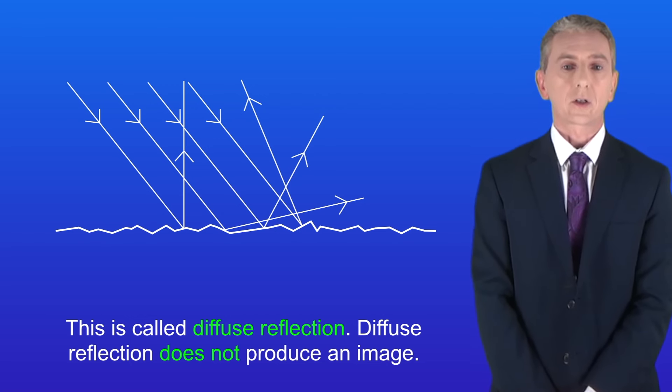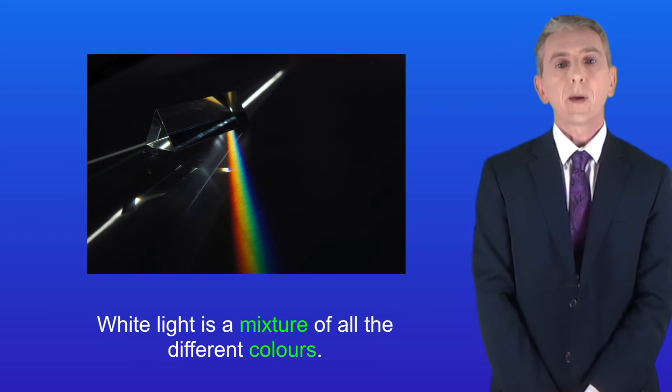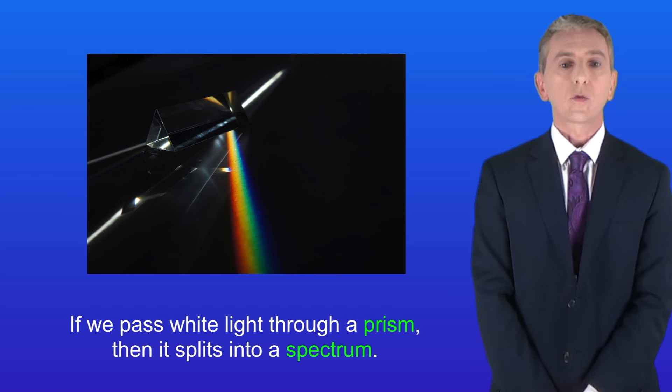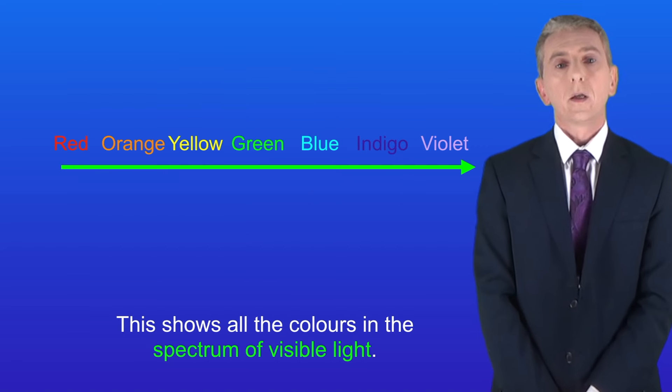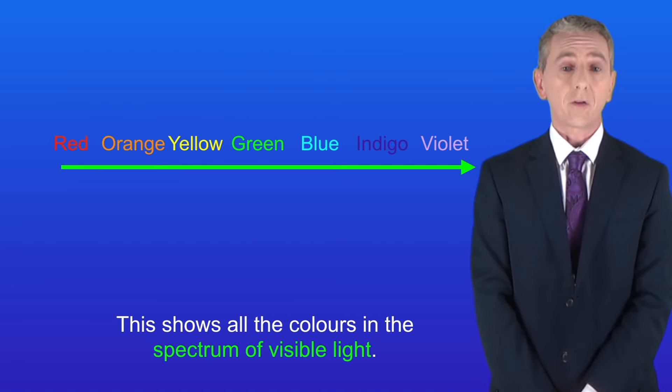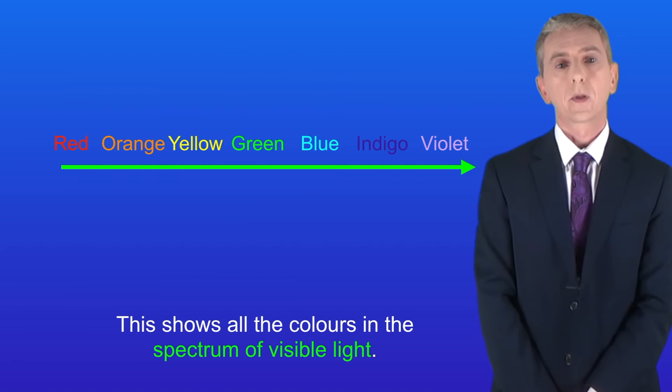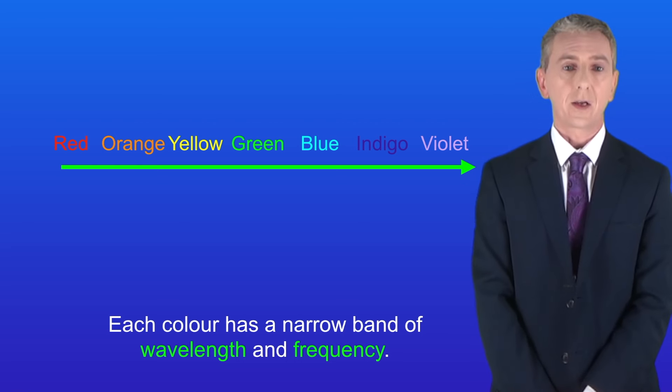Okay we're going to take a look now at color. Remember that white light is a mixture of all the different colors. If we pass white light through a prism then it splits into a spectrum like this. So here are all the colors in the spectrum of visible light. Now the key idea that you need to understand is that each color has a narrow band of wavelength and frequency.